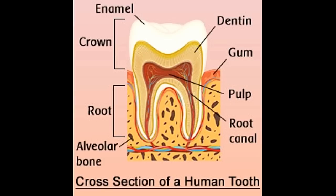Normally, adults have 32 teeth, with 16 teeth each in the upper and lower jaw. 28 of the 32 permanent adult teeth erupt by the age of 13 years. It must be noted that only two-thirds of each tooth is visible, while one-third is underneath the gums.